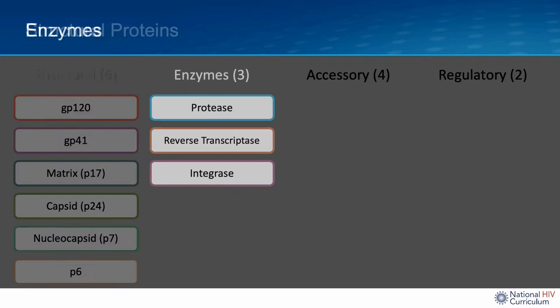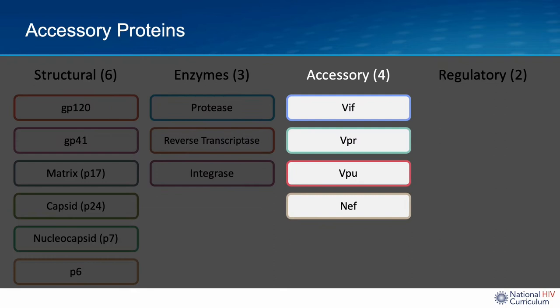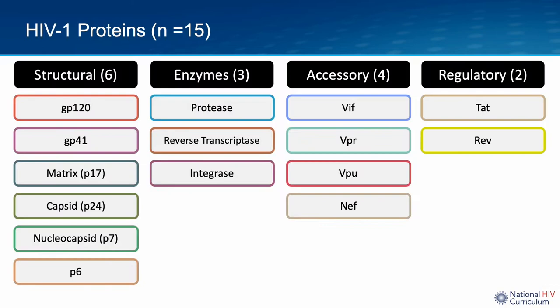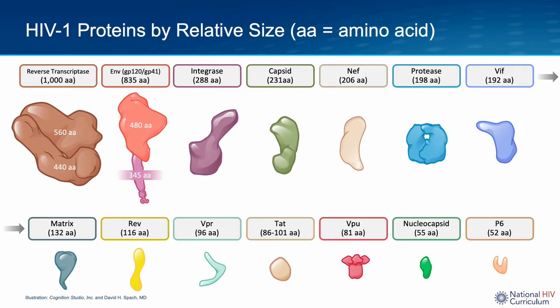There are three enzymes: protease, reverse transcriptase, and integrase. There are four accessory proteins: VIF, VPR, VPU, and NEF, and two regulatory proteins: TAT and REV. These 15 proteins have distinct functional roles for HIV, and they vary significantly in size. This image shows the relative size of the HIV proteins based on the number of amino acids in the mature protein. I've grouped the GP120 and GP41 subunits together as a single HIV envelope glycoprotein, and the HIV protease is shown in its functional dimer conformation.